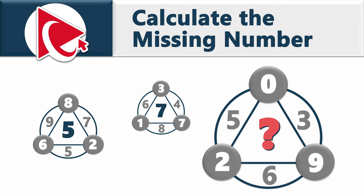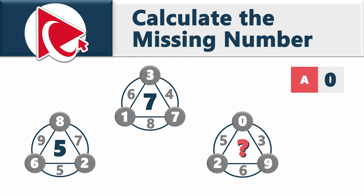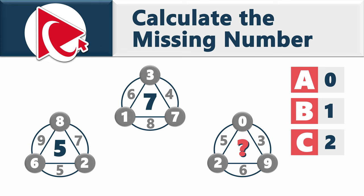The third shape has numbers 0, 3, 9, 6, 2, 5, and then in the middle comes the missing number, which you need to calculate and select out of four possible choices: Choice A: 0, Choice B: 1, Choice C: 2, and Choice D: 3.